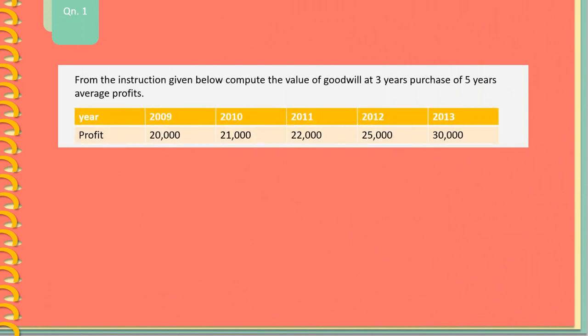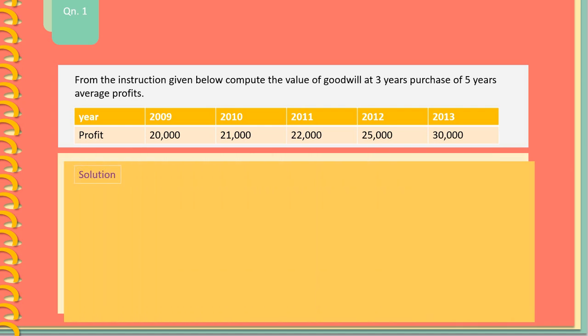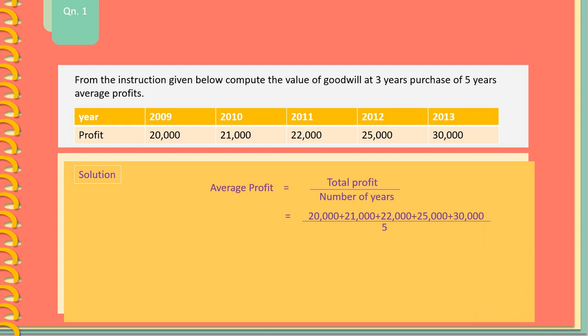Question 1: From the instruction given below, compute the value of goodwill at 3 years purchase of 5 years average profits. The average profit is equal to total profit divided by the number of years: 20,000 plus 21,000 plus 22,000 plus 25,000 plus 30,000 divided by 5, which equals 1,18,000 divided by 5, giving an average profit of Rs. 23,600.